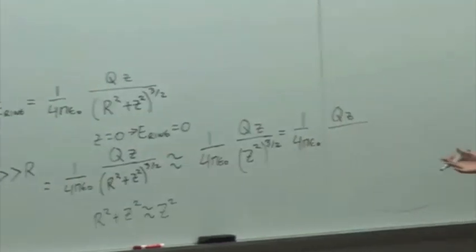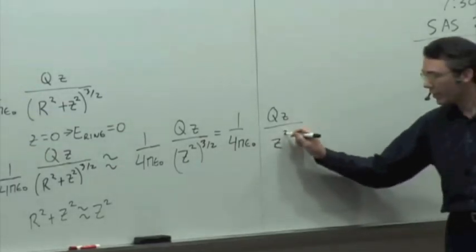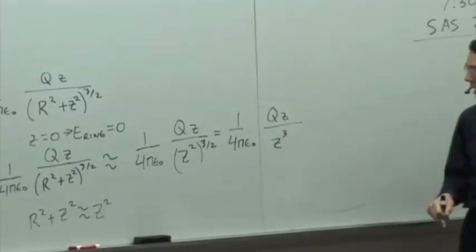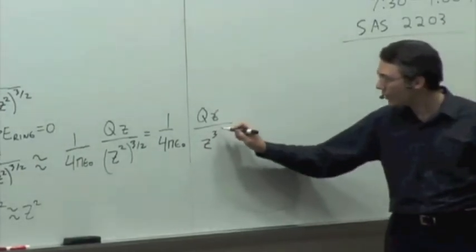Z squared to the 3 halves gives you z to the 3rd, z divided by z to the 3rd, so what are we going to get in the denominator when things cancel out? Z squared, right?